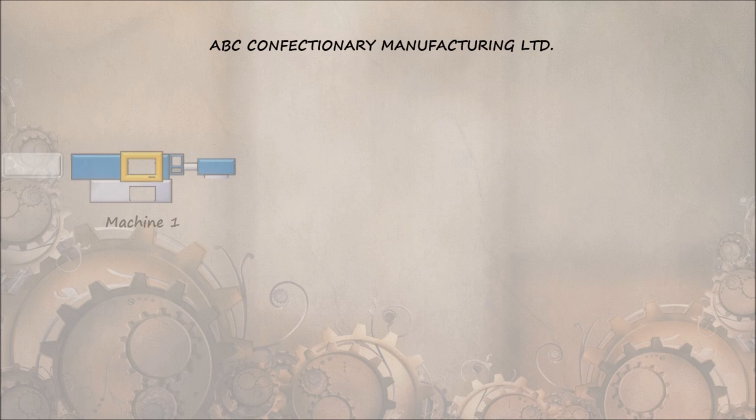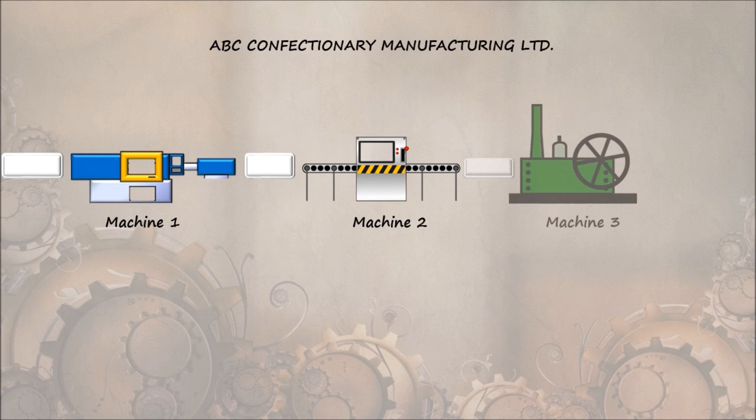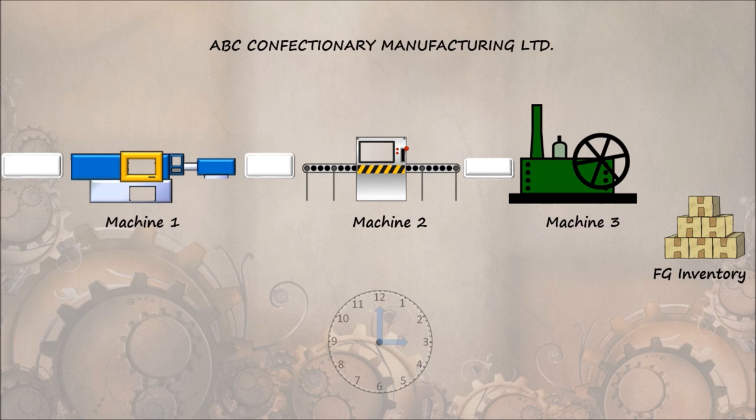Now that you have understood the basics of supply chain, let's focus on the manufacturing plant. Assume that there are three machines: Machine 1, Machine 2, Machine 3, required to process the raw materials into finished goods.